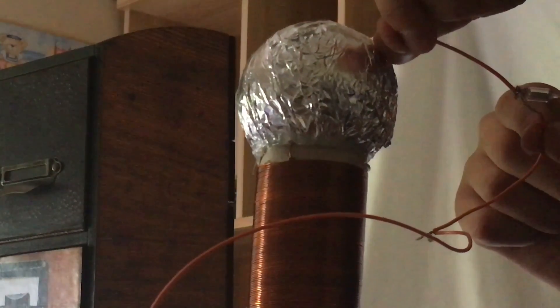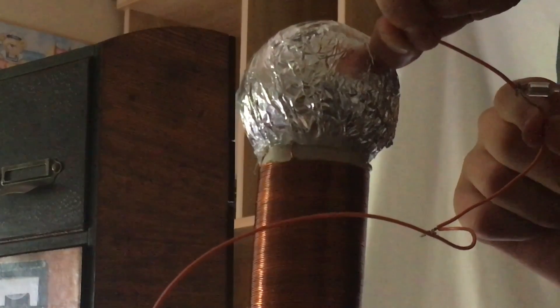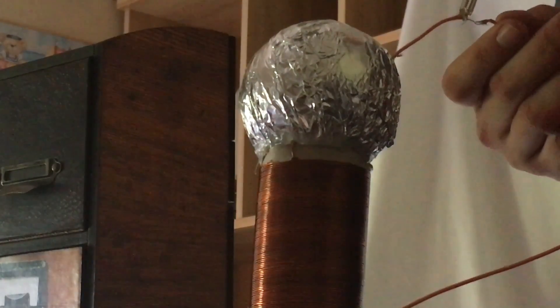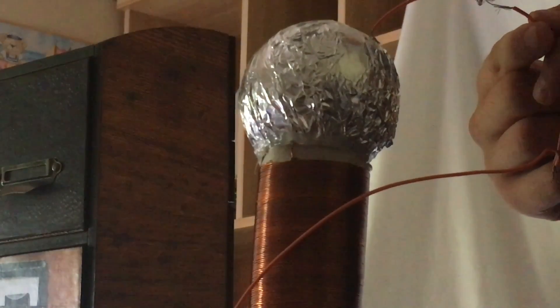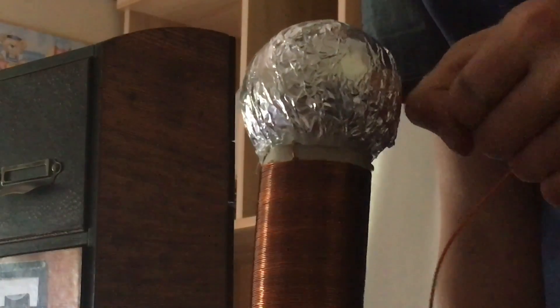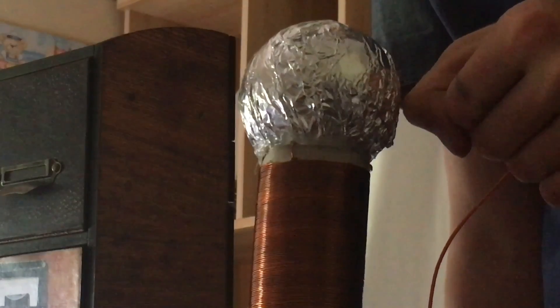If you want to adjust how quickly sparks occur, you can adjust the gap between the two nails or the spark gap. Also, when you're demonstrating this apparatus to someone, make sure that they know that the secondary coil and the primary coil are actually not connected together. The way the electricity goes from the primary coil to the secondary coil is actually through the air.